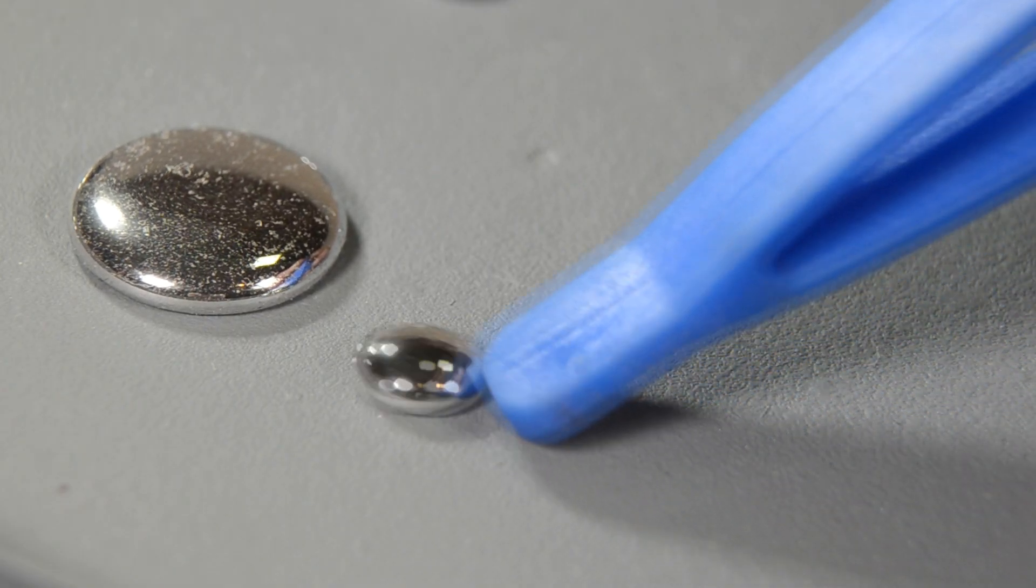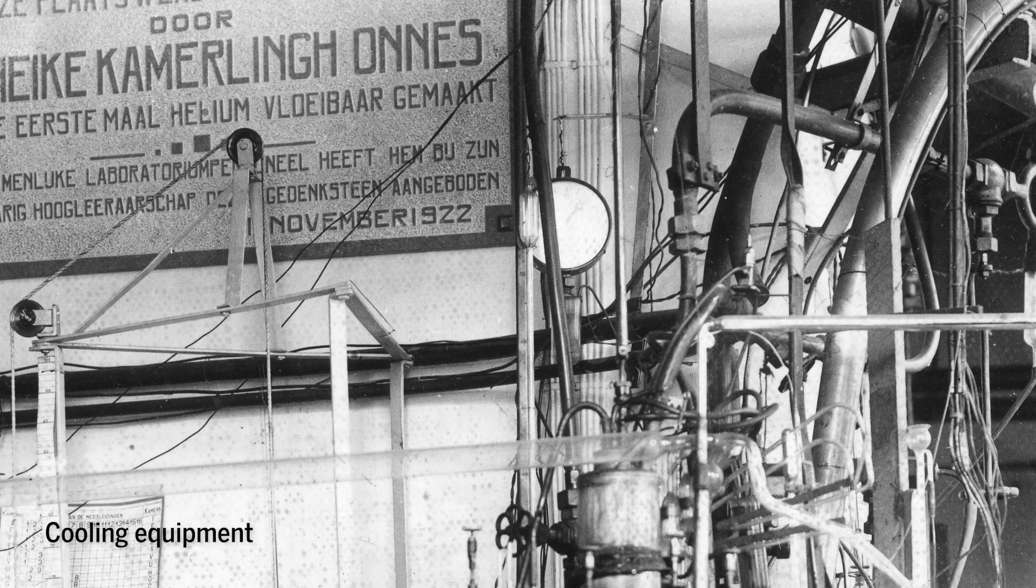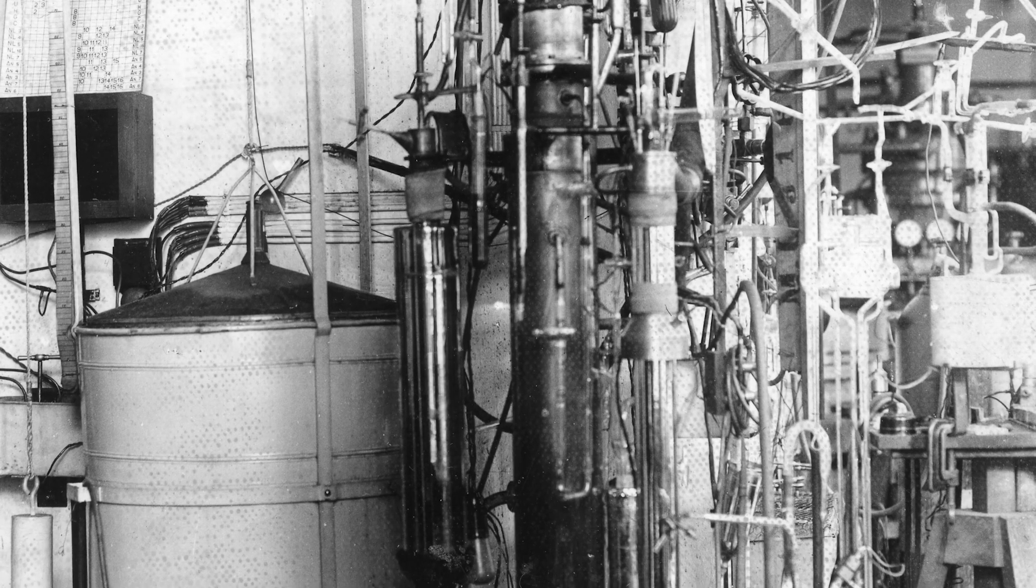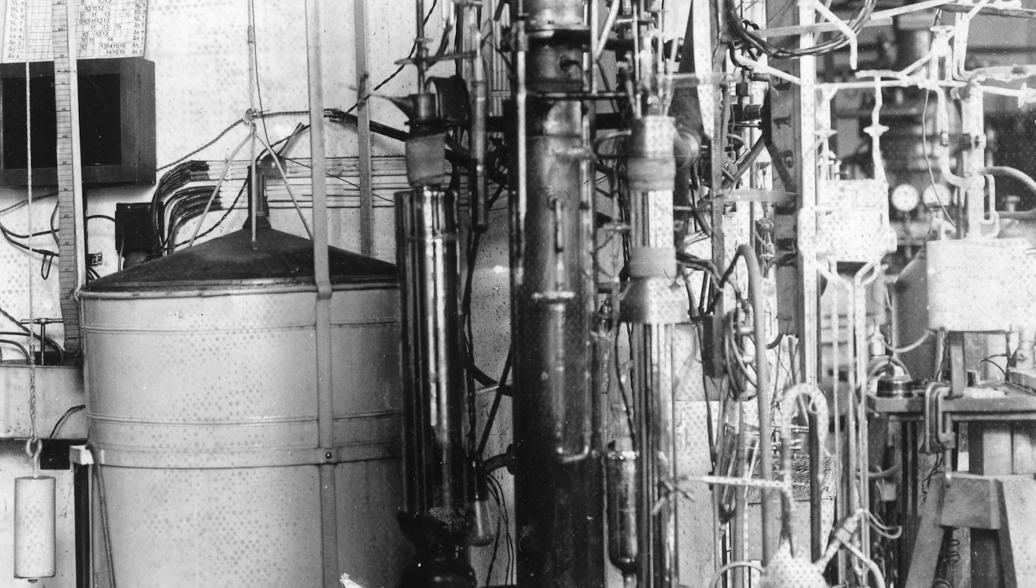The first superconductors discovered in 1911 were elemental metals, such as mercury, cooled to just above absolute zero. At that temperature, electrons no longer bump into atoms when they're traveling.